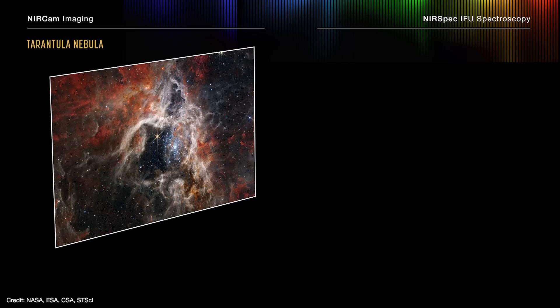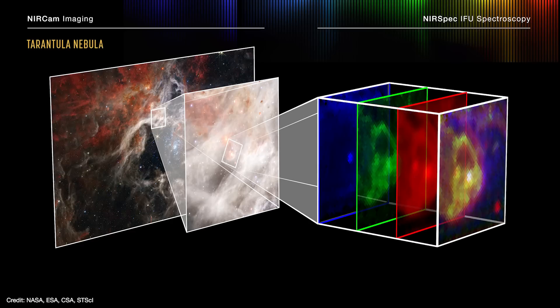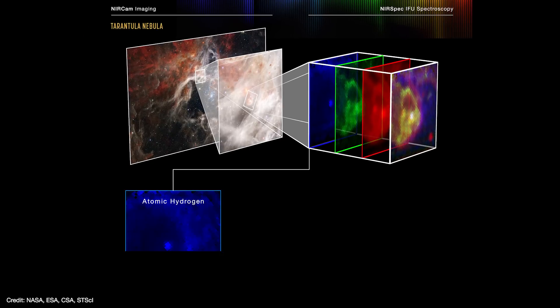To test this hypothesis, NIRSpec used a special imaging mode called integral field unit spectroscopy, and this allowed it to image the region at a set of very specific wavelengths. They found that atomic hydrogen, shown here in blue, is separated from the protostar, and this is pretty much what you'd expect to see if this were entirely a bubble that was being blown outward.